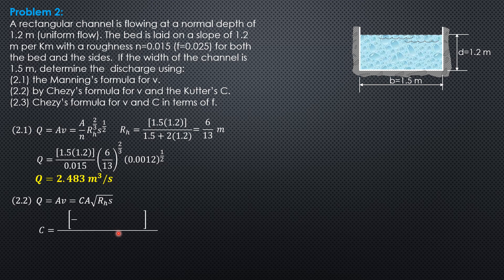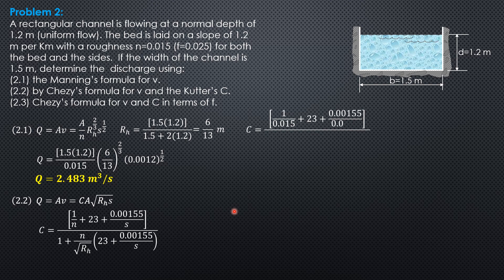So C is 1 over N, 1 plus 23 plus 0.00155 over S, over 1 plus N over square root of hydraulic radius, quantity 23 plus 0.00155 over S. Substitute, 1 over 0.015 plus 23 plus 0.00155 over 0.0012 over 1 plus 0.015 over square root of 6 over 13 times quantity 23 plus 0.00155 over 0.0012.